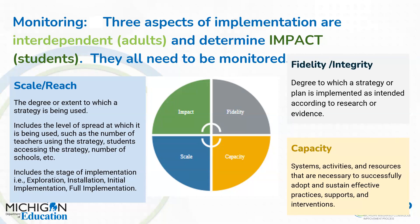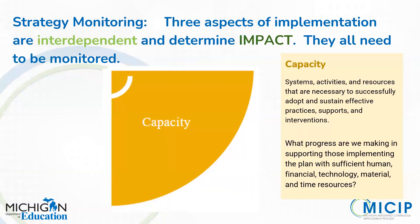We're going to start with capacity. Even though in the platform fidelity comes first, we start with capacity because it significantly affects our ability to implement with fidelity as well as scale and reach. The definition of capacity is: those systems, activities, and resources that are necessary to adopt and sustain practices, supports, and interventions. The key monitoring question concerns progress on implementing the plan with sufficient resources.